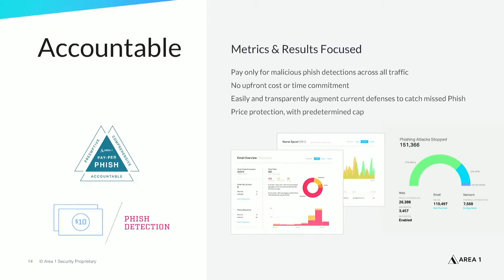At Area One Security, we believe in delivering cybersecurity that works — and if it doesn't work, you shouldn't have to pay for it. We offer a new model of cybersecurity: the first and only performance-based protection in the industry, with a 99.997% phishing catch rate and a 24-plus-day average time advantage to detect phishing infrastructure compared to competing solutions. We're confident we can deliver the most effective protection — or you don't pay anything. With pay-per-fish, you pay only if phish is detected; there's no upfront cost or time commitment. We also offer annual subscriptions with the option to start on pay-per-fish and convert to an annual subscription at any time.